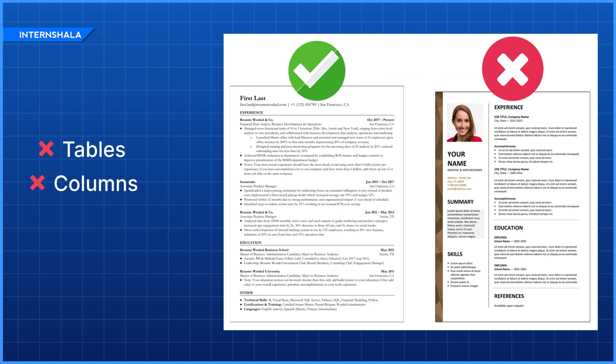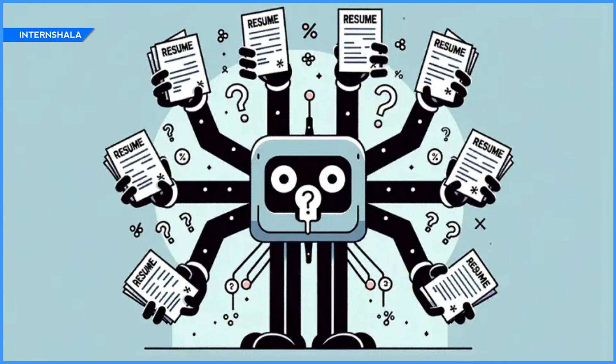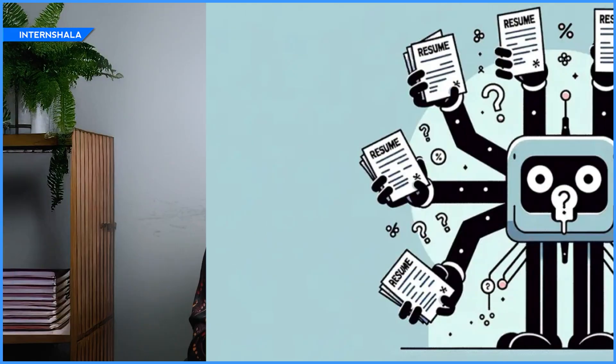Avoid using tables, columns, or fancy designs because these can confuse the ATS and make it harder for the system to read your information correctly. To keep things simple, try using Google Docs to create your resume. You can also add a Grammarly browser extension — this will help you avoid grammatical errors in your resume.